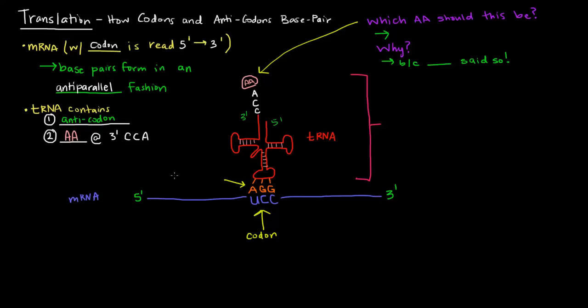And this tRNA here has this as the anticodon, and they base pair. So here we have UCC, the anticodon being complementary AGG.